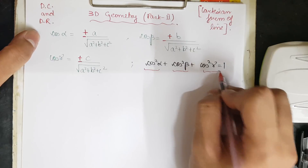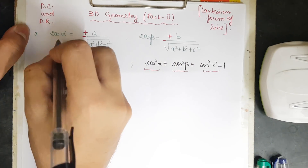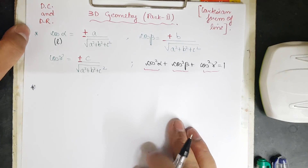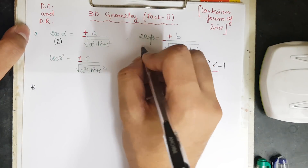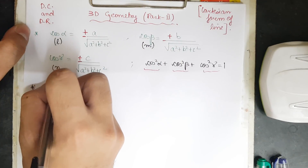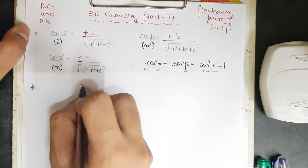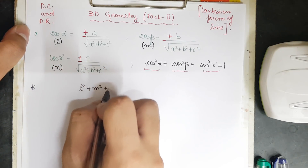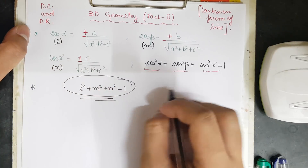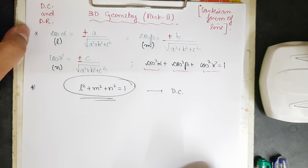I had also proved that cos²α + cos²β + cos²γ = 1. Now let cos α = l, cos β = m, and cos γ = n. So what we can say finally is that l² + m² + n² must always equal 1 for direction cosines.